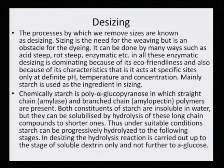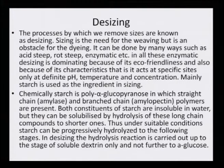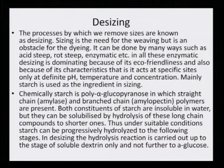Chemically, starch is poly-alpha-glucopyranose in which straight chain amylose and branched chain amylopectin polymers are present. Both constituents of starch are insoluble in water, but they can be solubilized by hydrolysis of these long chain compounds to shorter ones. In desizing, the hydrolysis reaction is carried out only up to the stage of soluble dextrin, and not further to alpha-glucose. So the amylopectins and the amylase must be broken down only until they are solubilized — it need not break down to its smallest component.